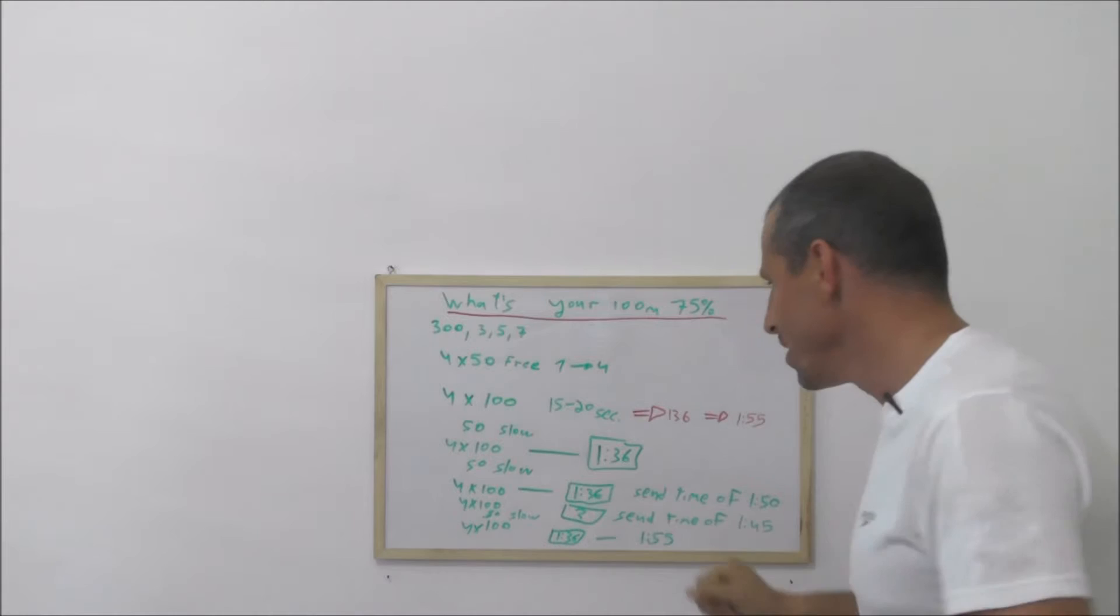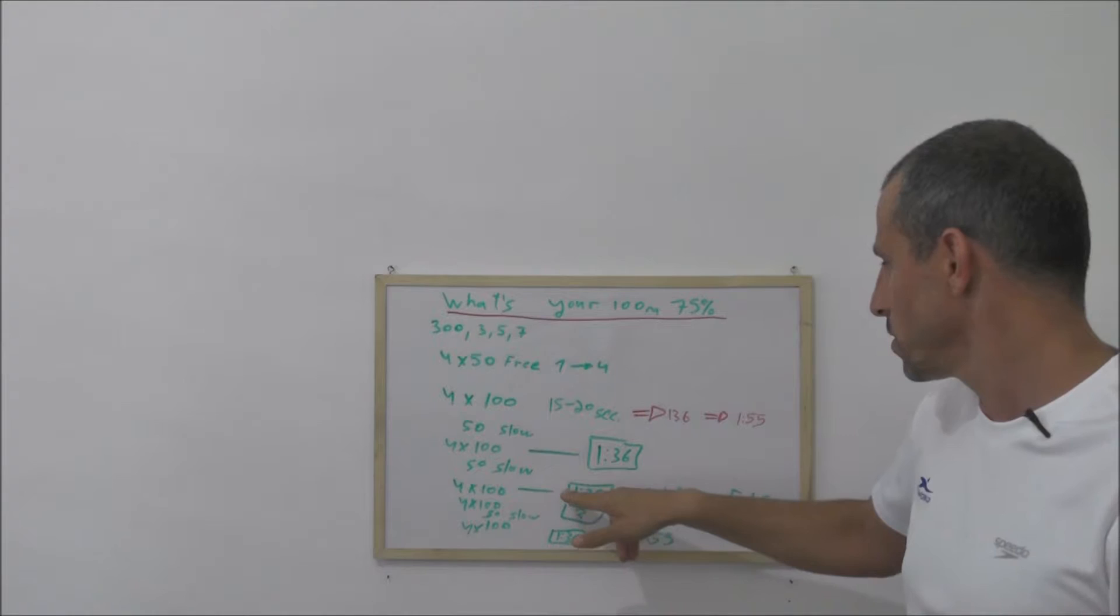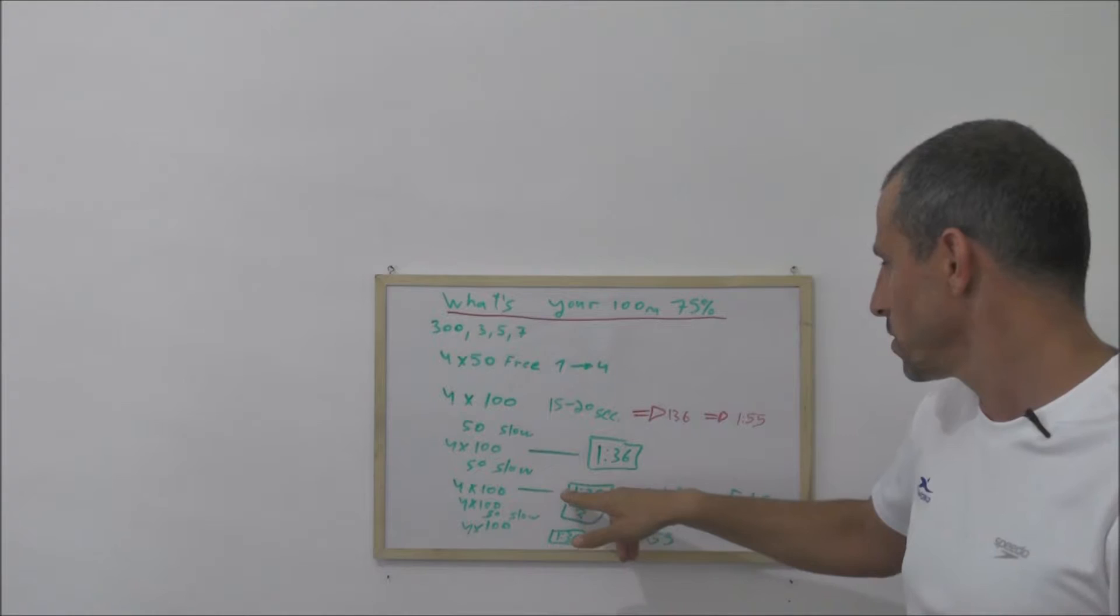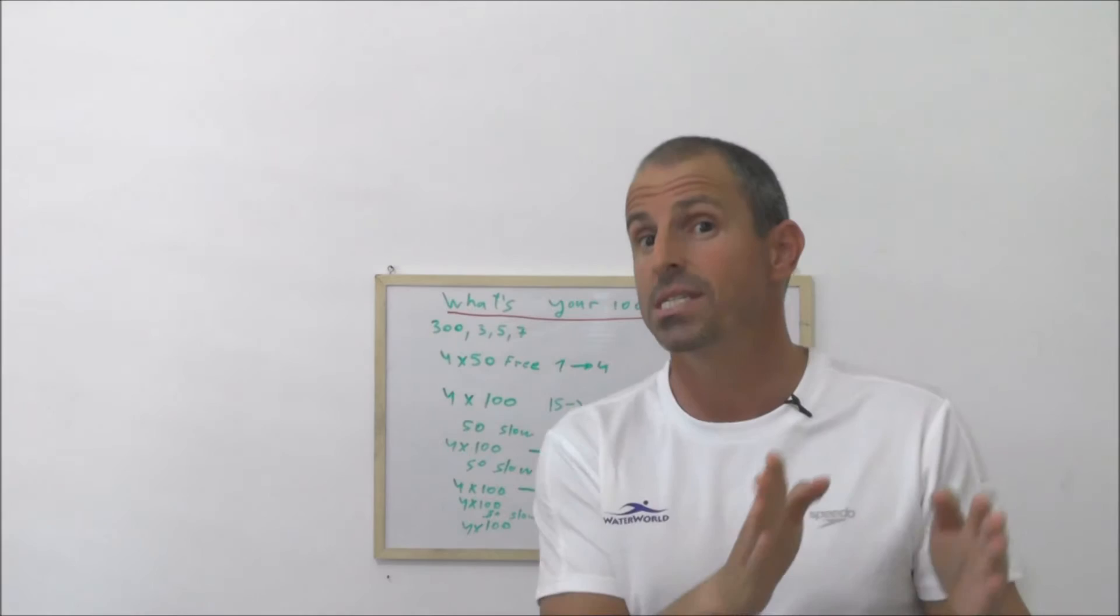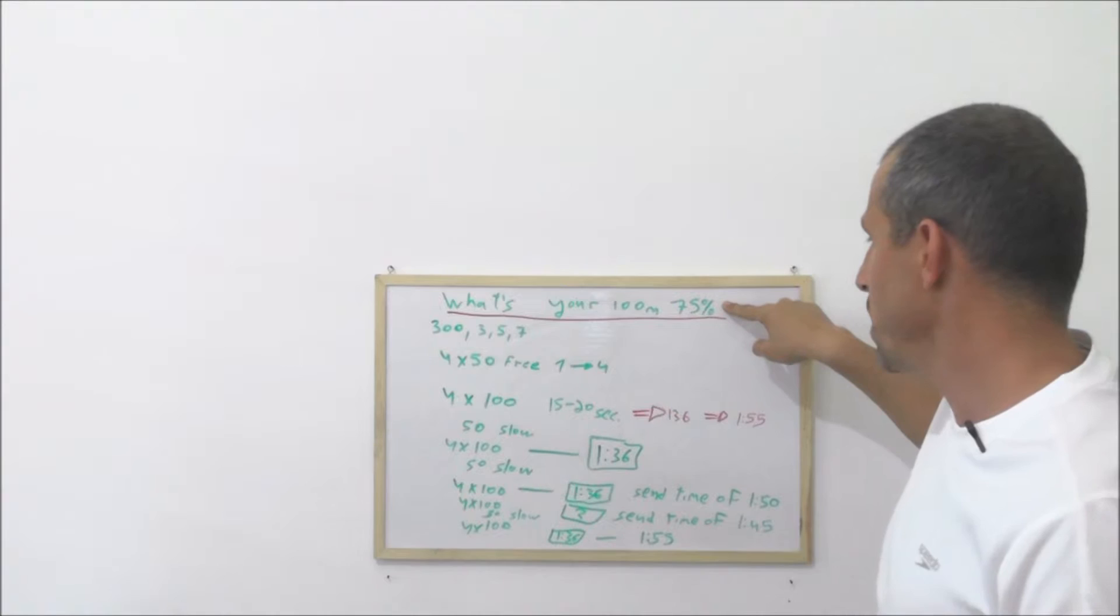You're gonna do 50 slow and this time it's not gonna be the average pace of 75 percent. You're gonna do four times 100, try to swim in 1:36 but the send-off time is gonna be 1:50. If you succeed in 1:36, the average pace is not gonna be 75 percent, it's probably gonna be something like 80 percent.